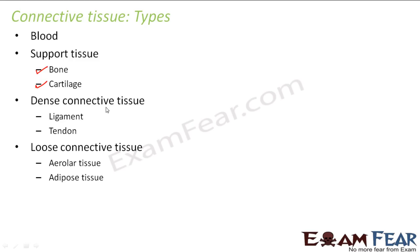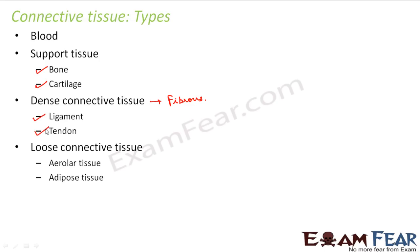Dense connective tissue, as the name says, is very dense — it has more fibers in the extracellular matrix. The proportion of fibers is more when compared to the ground substance. Dense connective tissue is also sometimes known as fibrous connective tissue. Under this category fall ligaments and tendons, which help in joining bone to bone and bone to muscle.